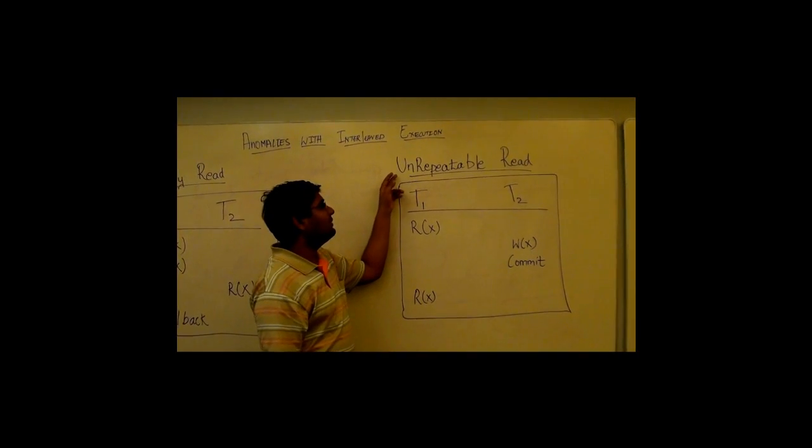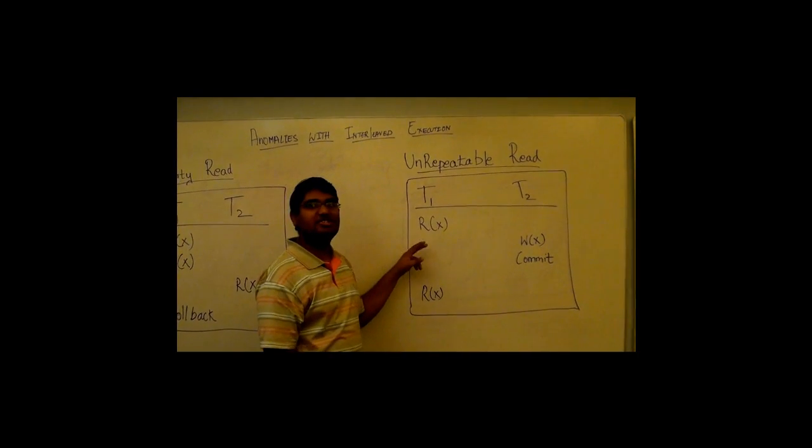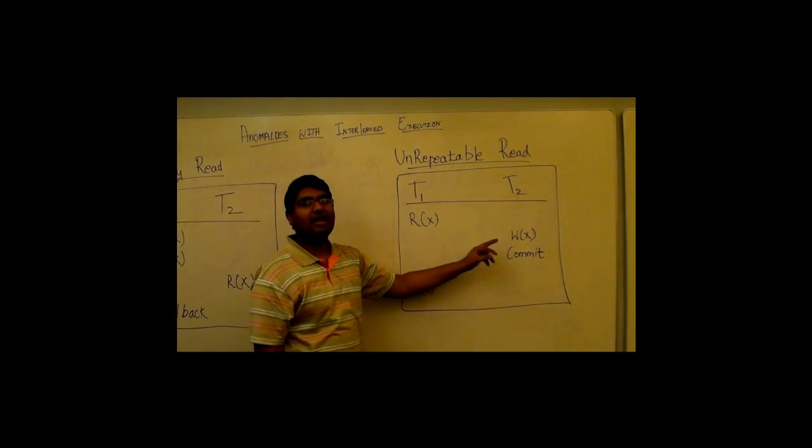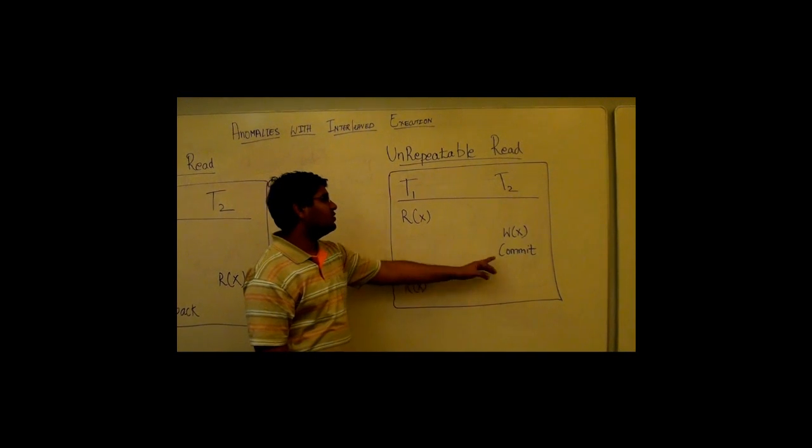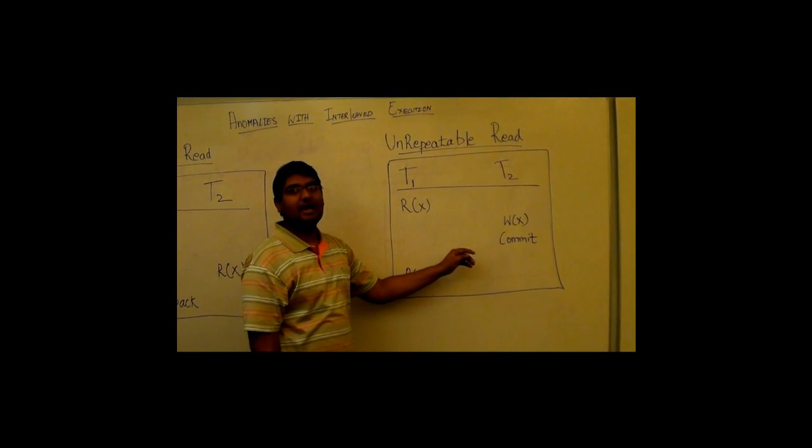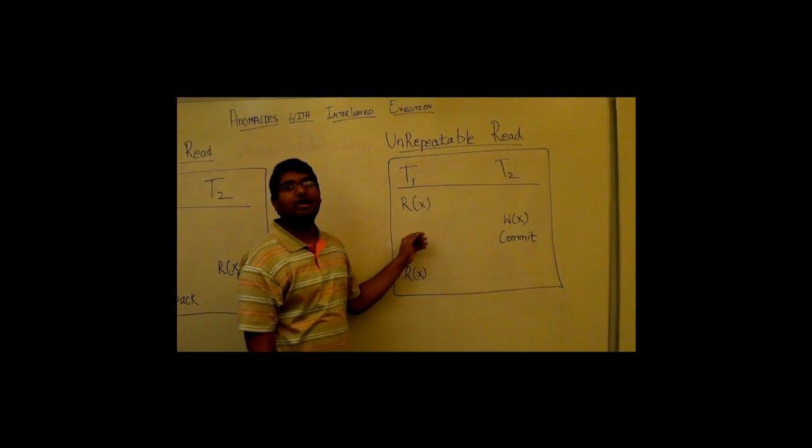Coming to unrepeatable read, in transaction T1, a read operation is performed. In transaction T2, a read operation is performed and then a commit is performed. In transaction T1, a read operation is performed. Here, T2 receives a modified value or T1 sees the data item that has been inserted or deleted.